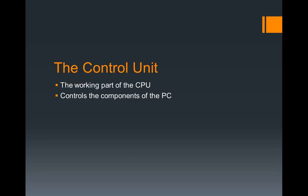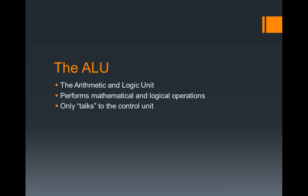So if you move your mouse left and right, the control unit tells the operating system that you are moving the mouse around. Now the other part of the processor, or CPU, is the ALU.